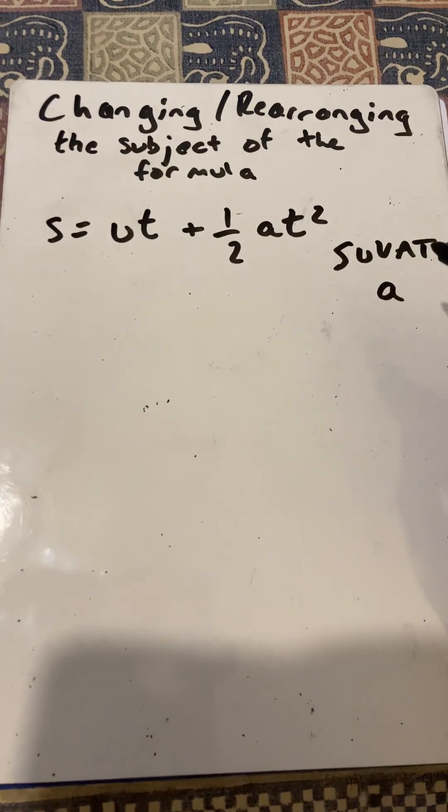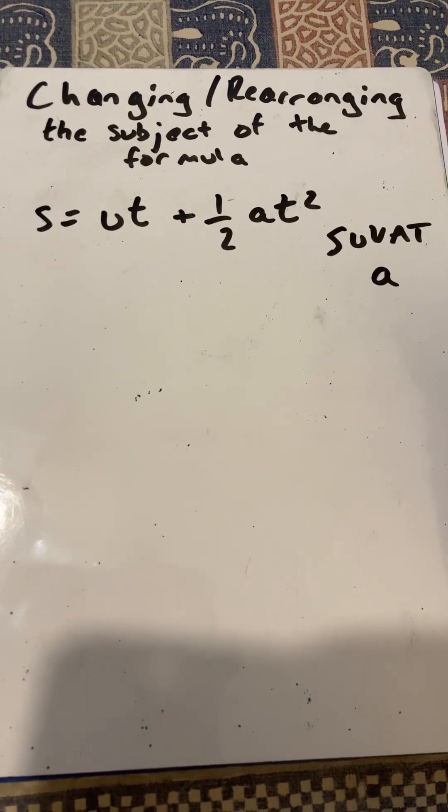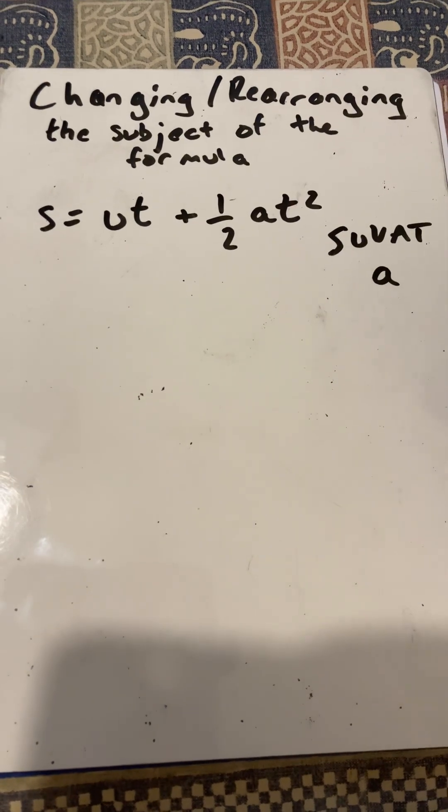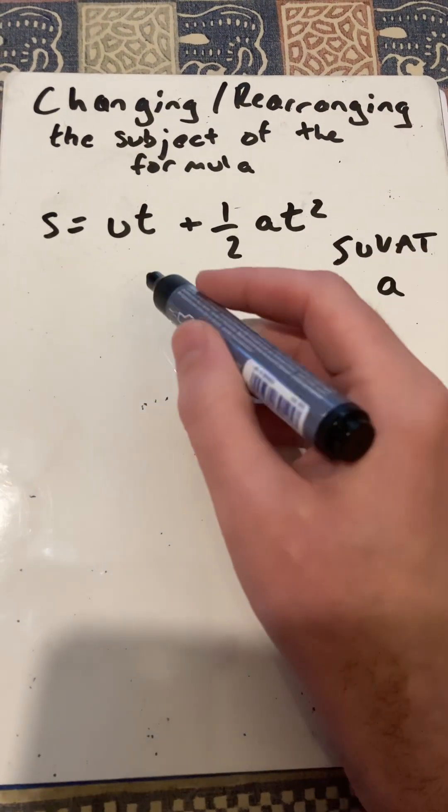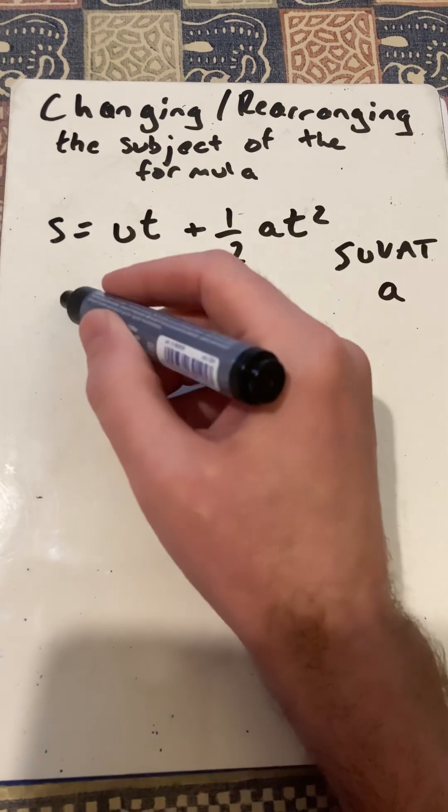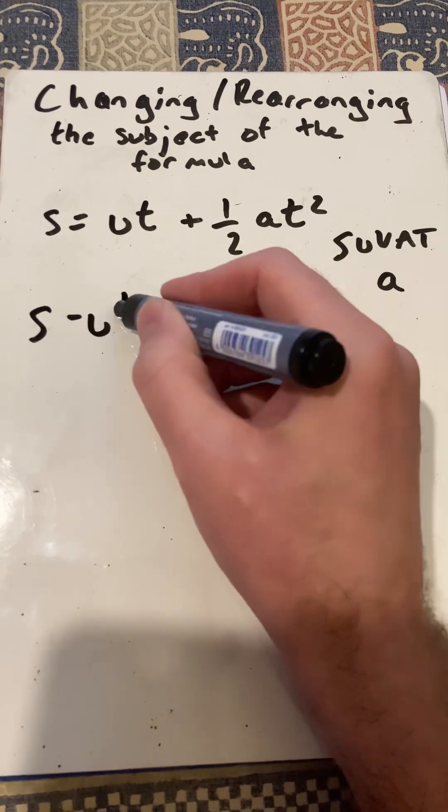So I'm going to do the same things that I would do if I was solving an equation, the balance method, opposite operations to both sides of the equation. So I'm going to subtract UT from both sides.